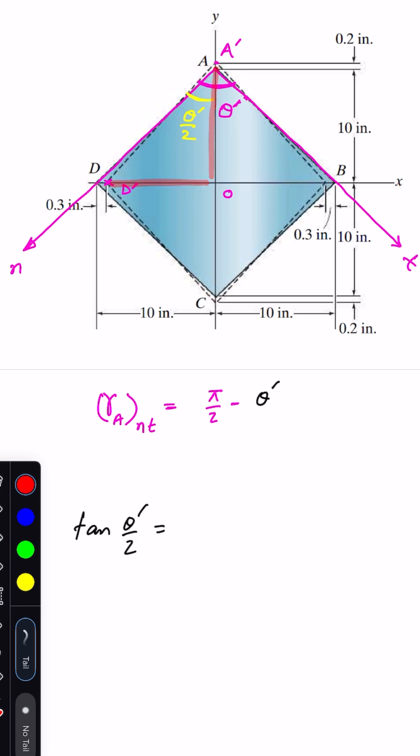This perpendicular is 10 inch minus 0.3, so 10 minus 0.3 divided by this side, which will be 10 inch plus 0.2. Because the point A moves outwards, we can say that will be 10 plus 0.2.